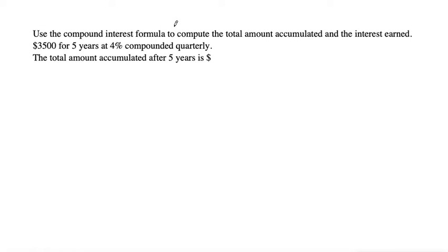Use the compound interest formula to compute the total amount accumulated and the interest earned. We have $3,500 as our principal, that's what we're investing, for five years at 4% compounded quarterly.